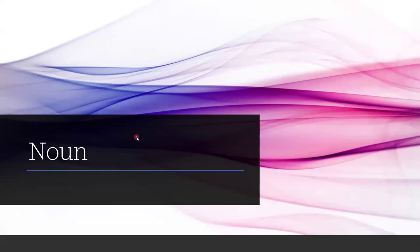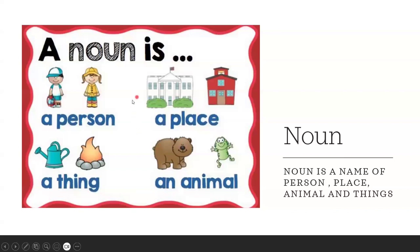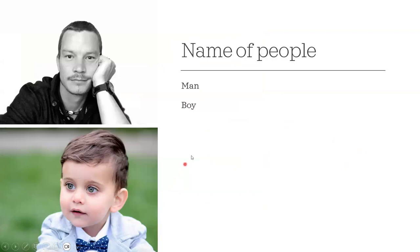Hello, my lovely kids! Today we want to speak about noun. What is the meaning of noun? A noun is the name of a person, place, thing, or animal. This is a noun — a name of a person, name of a place, name of a thing, name of an animal. Let us get some examples.